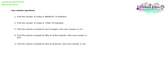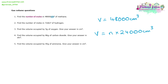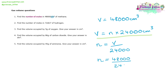Question one asks us to find the number of moles in 48,000 cm³ of methane. The volume is 48,000 cm³, so the equation we need is V = n × 24,000 cm³. Rearranging gives us n = V ÷ 24,000. Substituting in 48,000 and dividing by 24,000 gives us the number of moles, which in this case is 2.